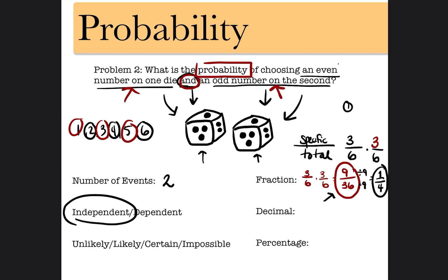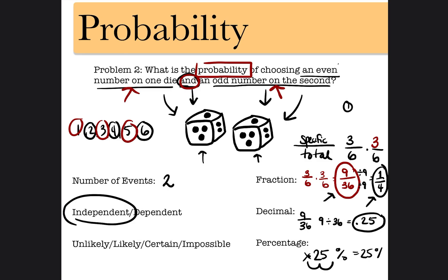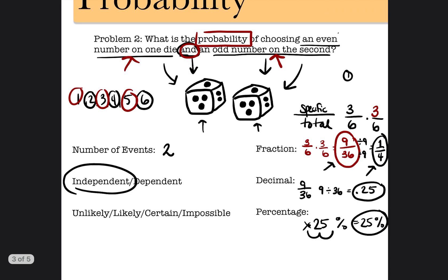Now let's write that as a decimal: 9 divided by 36 equals 0.25. To write 0.25 as a percentage, move the decimal two places to the right and add the percent sign, giving 25%. So this probability can be represented as 9/36, or reduced to 1/4, as a decimal 0.25, and as a percentage 25%.